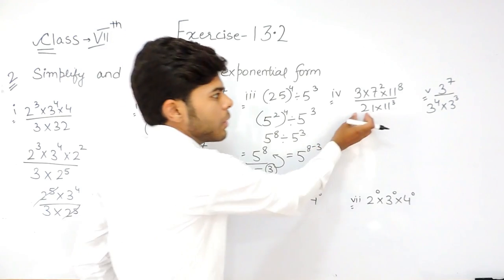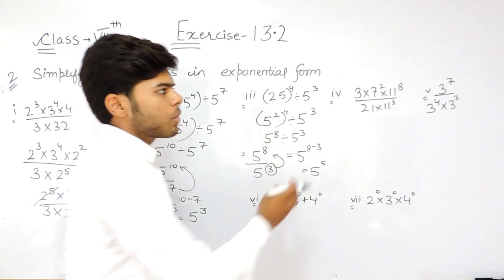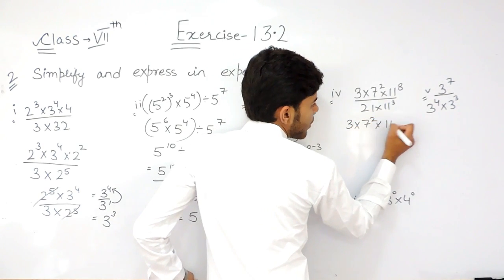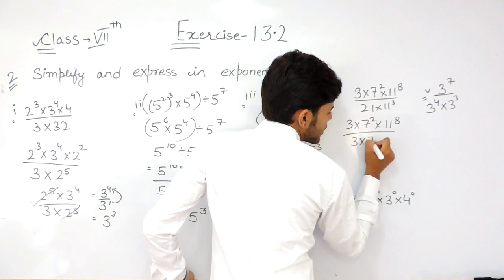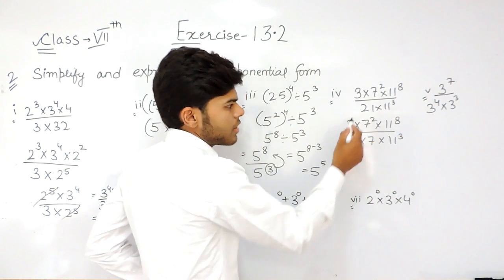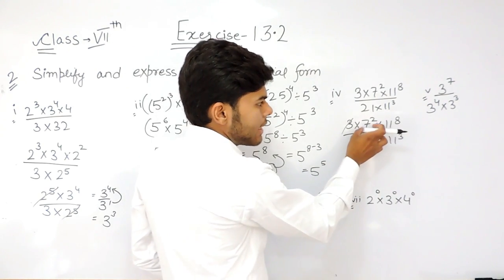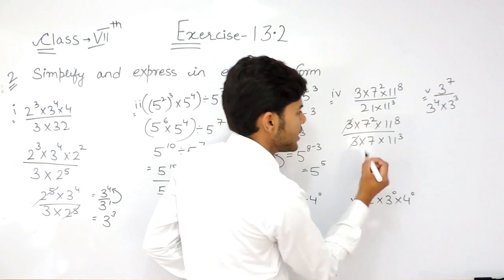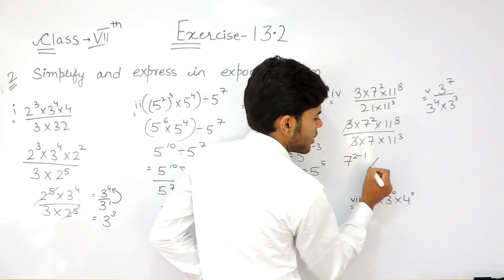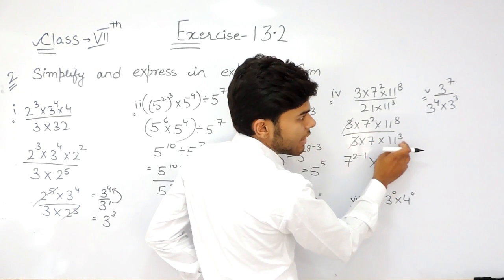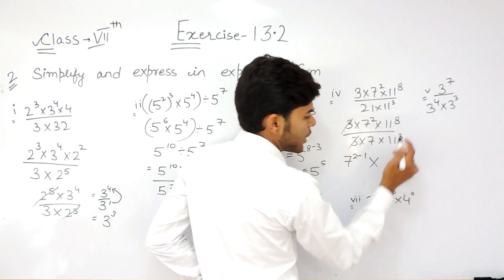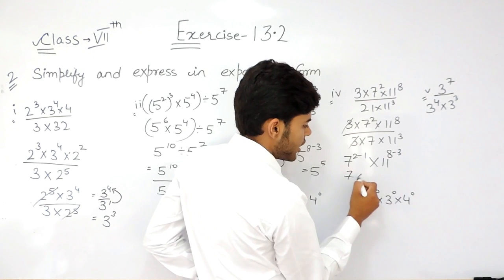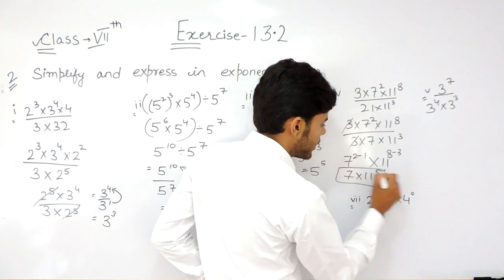In this question, 21 is not in its prime factorized form, so we will convert it. We can write this like 3 into 7 to the power 2 into 11 to the power 8, upon 3 into 7 into 11 to the power 3. Now this 3 directly gets cancelled out. It is 7 to the power 2 and 7 to the power 1 — this one will go in the numerator and it will change its sign, so it will be 7 to the power 2 minus 1. Then 11 to the power 8 and 11 to the power 3 — this 3 will go in the numerator and it will change its sign, so it will be 11 to the power 8 minus 3. So our answer will be 7 into 11 to the power 5.